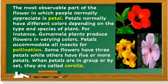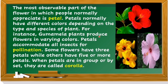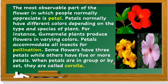The most observable part of the flower, which people normally appreciate, is the petal or petals. Petals normally have different colors depending on the type and species of plant. For instance, gumamela plants produce flowers in varying colors. Petals accommodate insects for pollination. Some flowers have three petals while others have five or more. When petals are grouped together, they are called the corolla.